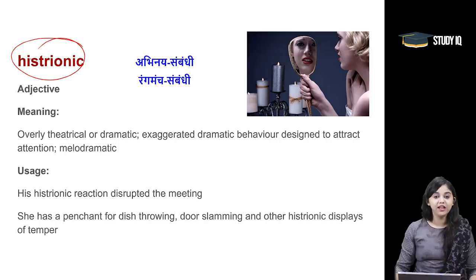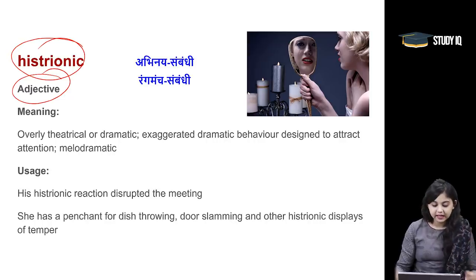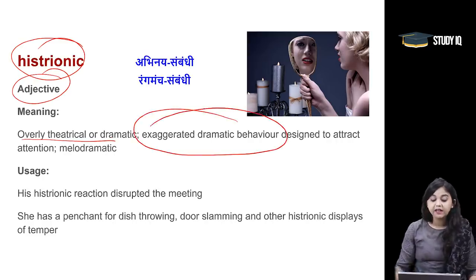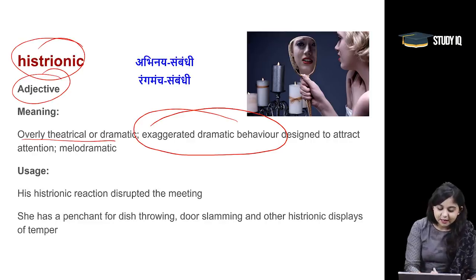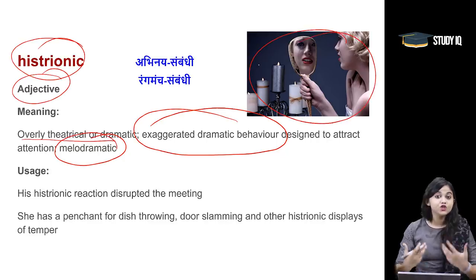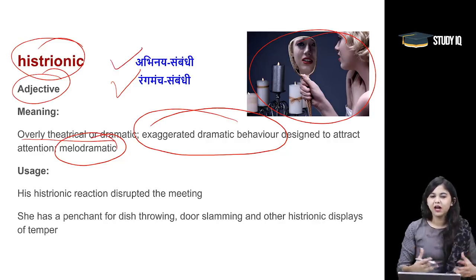Moving on to the next word: Histrionic. This adjective describes when you are very melodramatic, theatrical, and sometimes artificial — we will use histrionic. This term means overly theatrical or dramatic — someone having exaggerated dramatic behavior designed to attract attention. Something that is very melodramatic and slightly artificial. As you can see in the image, the lady is trying to be histrionic and show histrionics or theatrics. Any behavior that is stage-like, full of acting, and melodramatic — for that we'll use the word histrionic.